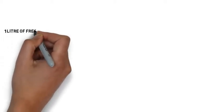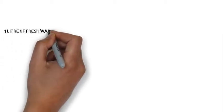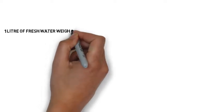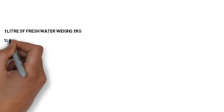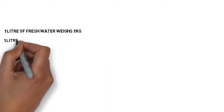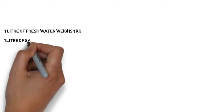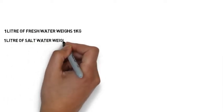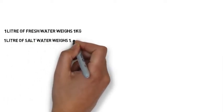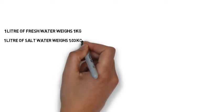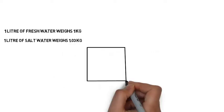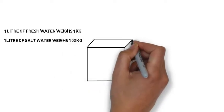The type of water is very important. One liter of fresh water weighs one kilogram. One liter of salt water weighs a little bit more because of all that salt — it weighs 1.03 kilograms.